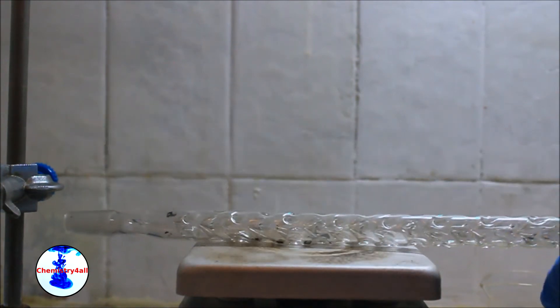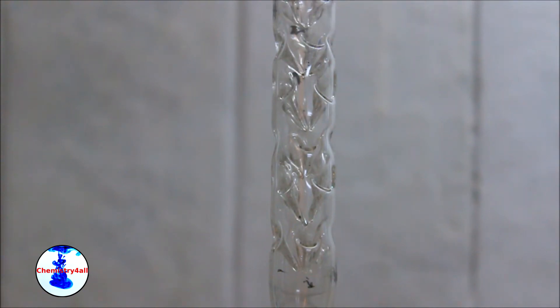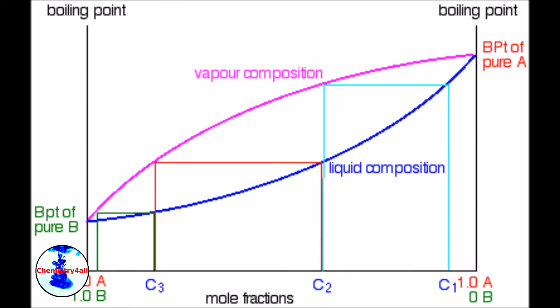In each successive plate the vapor becomes richer and richer in the most volatile species, while the liquid phase becomes richer and richer in the less volatile ones, so that when the vapor reaches the head it is mostly composed by the species with the lower boiling point present in the solution.